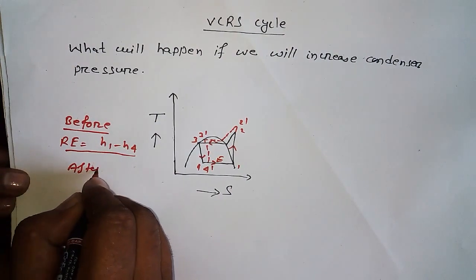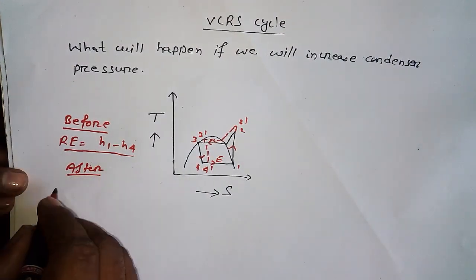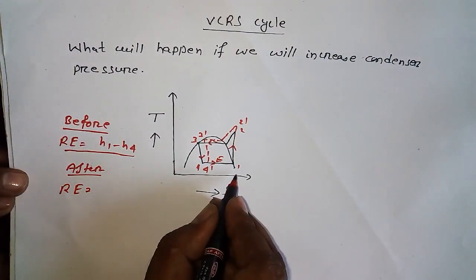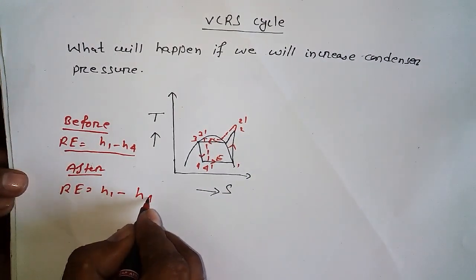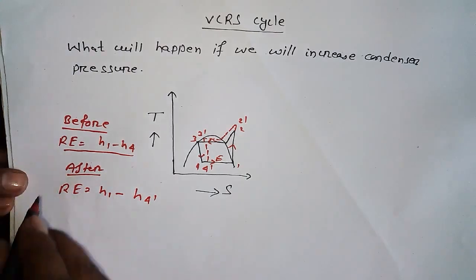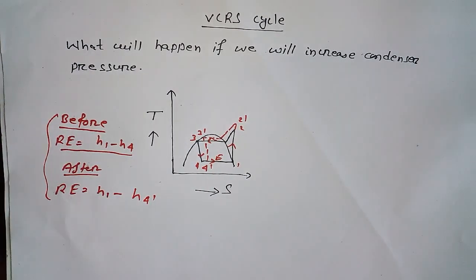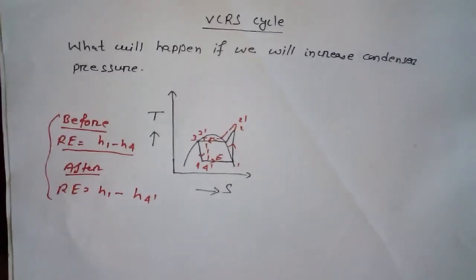Before increasing condenser pressure, we have refrigerant effect RE = h1 - h4. After increasing condenser pressure, refrigerant effect becomes RE = h1 - h4'. What is happening because of increasing condenser pressure?